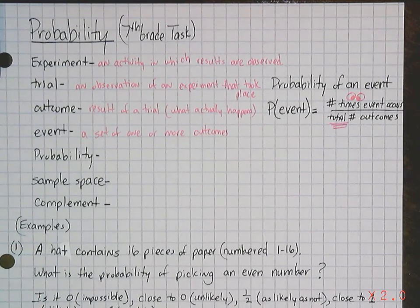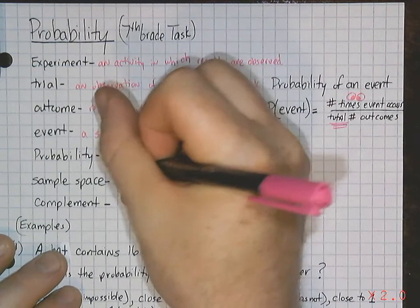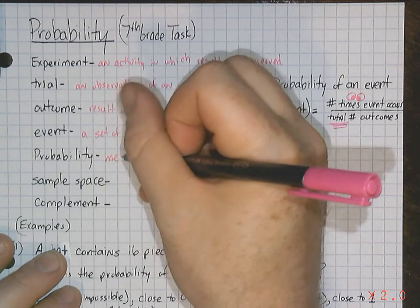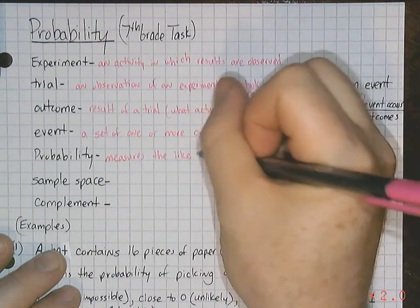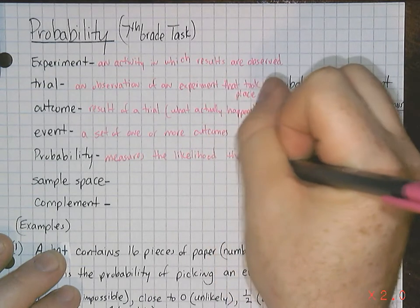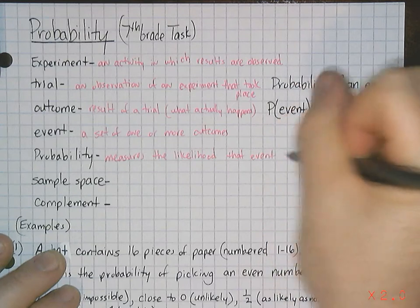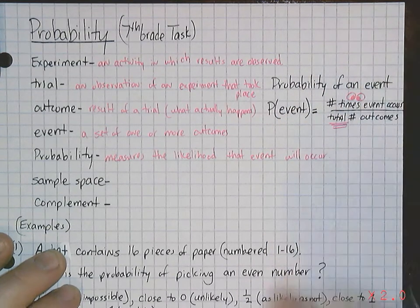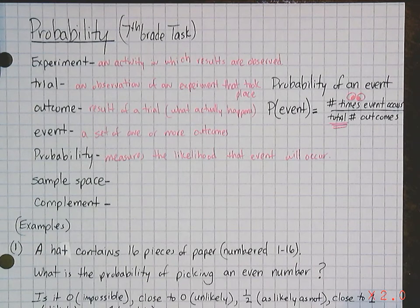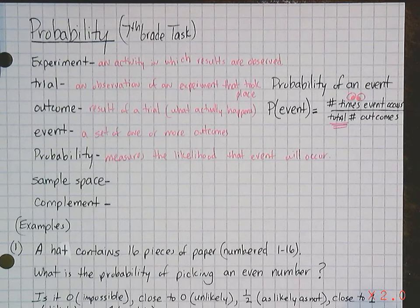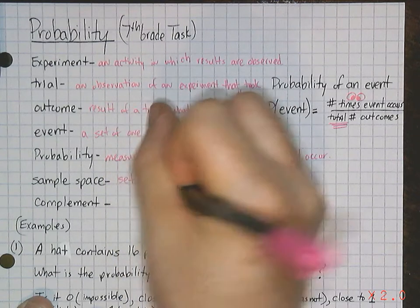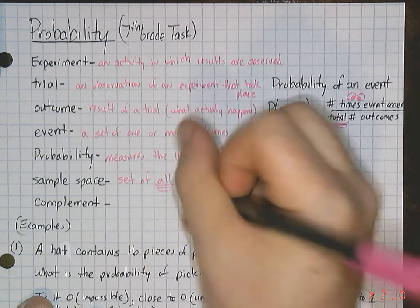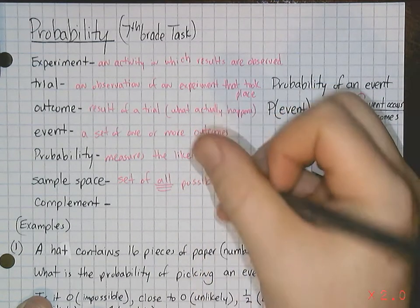Probability of an event is basically just what I just said. It measures the likelihood of an event that actually will happen. So it measures the likelihood that the event will actually occur. Sample space is basically kind of what could happen. These are all the total possible outcomes. So it's a set of all possible, total, possible outcomes of an event.